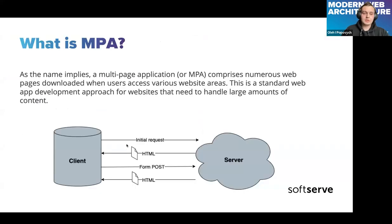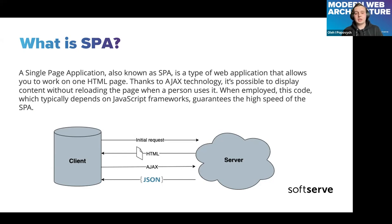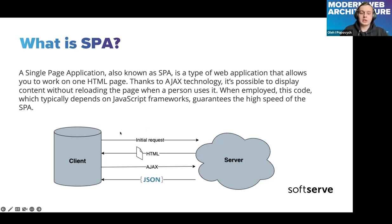Let's talk about the opposite: the single page application. A SPA is a type of application that allows you to work on one HTML page. Thanks to AJAX technology it's possible to display content without reloading the page. As you may see in the diagram, we receive HTML only after the initial request, then we fetch all necessary data via AJAX requests, receive JSON, and update our state — all routing handled by JavaScript.